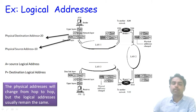The physical addresses change from hop to hop — that is, they are changed at every node — but the logical addresses usually remain the same throughout the transmission from sender to receiver.